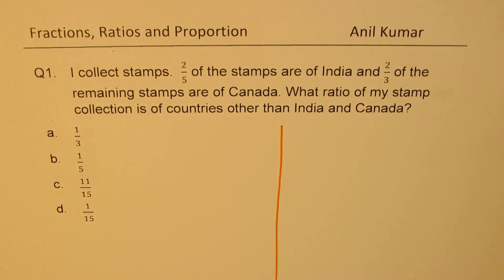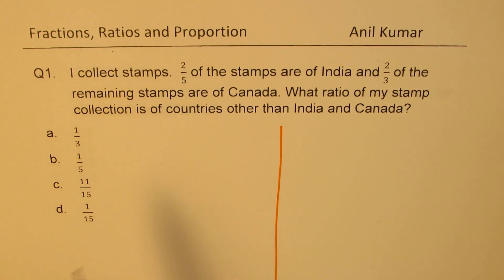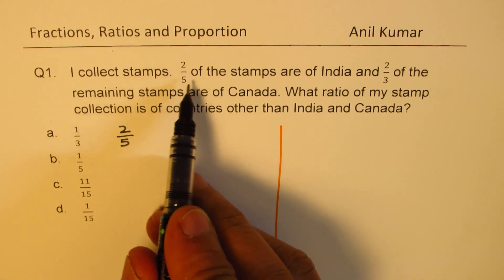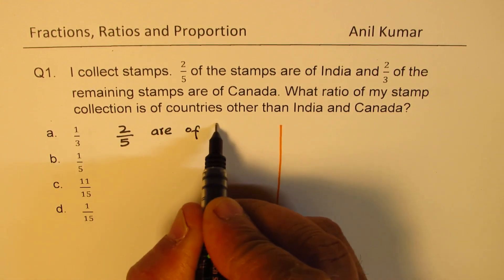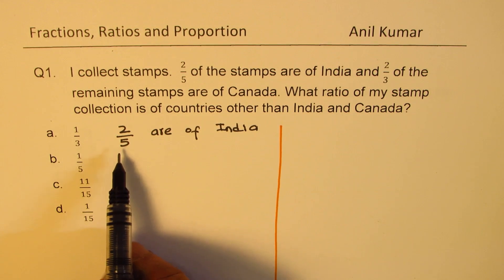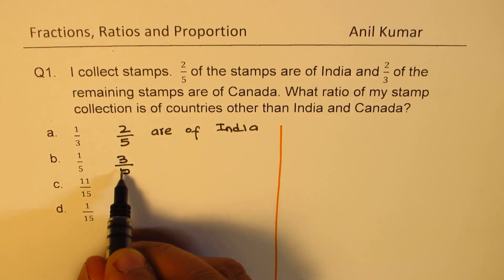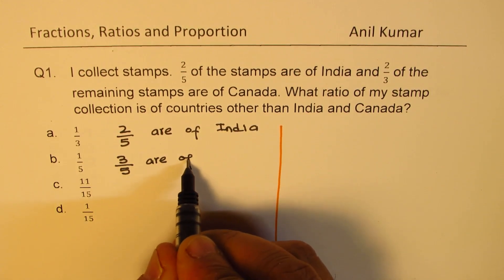One approach is by the definition of ratios. We have said that two-fifths of the stamps are of India. So if out of five, two are of India, then three remain. That means three out of five are of other countries.